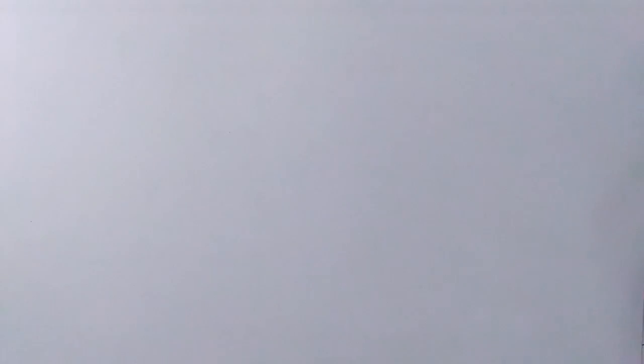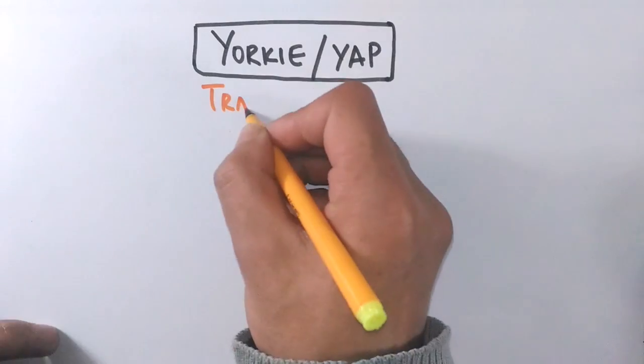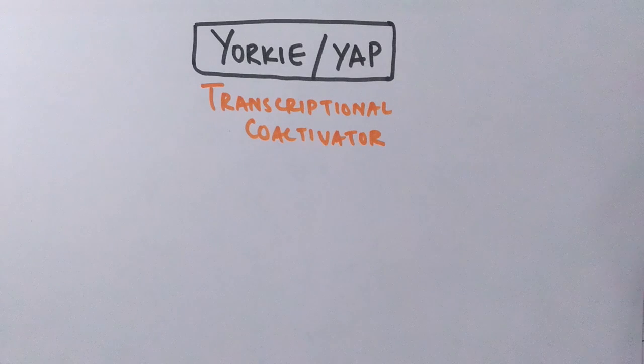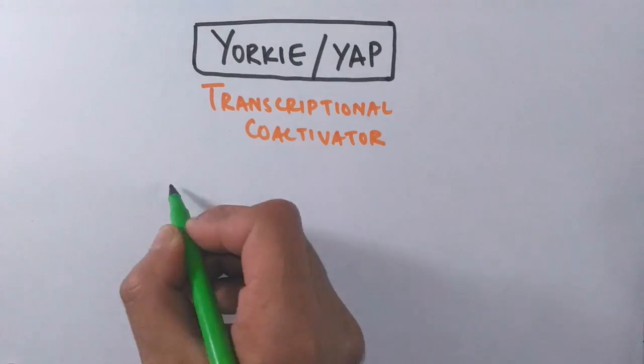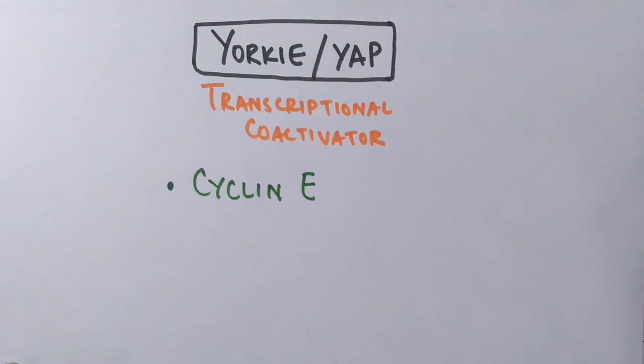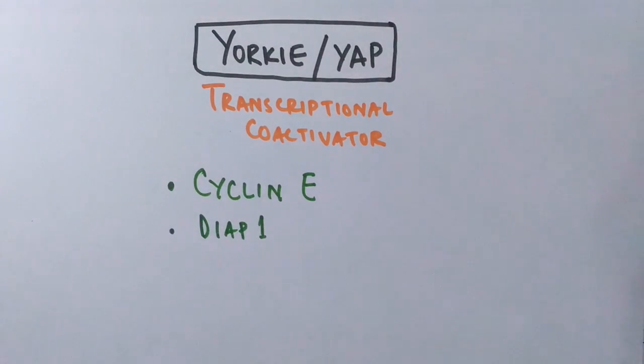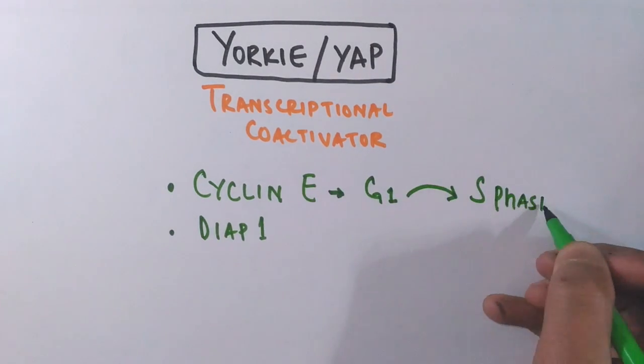This Yorkie or YAP protein kinase in nucleus is a transcription coactivator that activates some transcription units to drive transcription of certain genes. It regulates the transcription of cyclin E genes and DIAP genes, death associated inhibitor of apoptosis. The cyclin E component is one of the most important components of cell cycle as it drives cell from G1 phase to S phase.